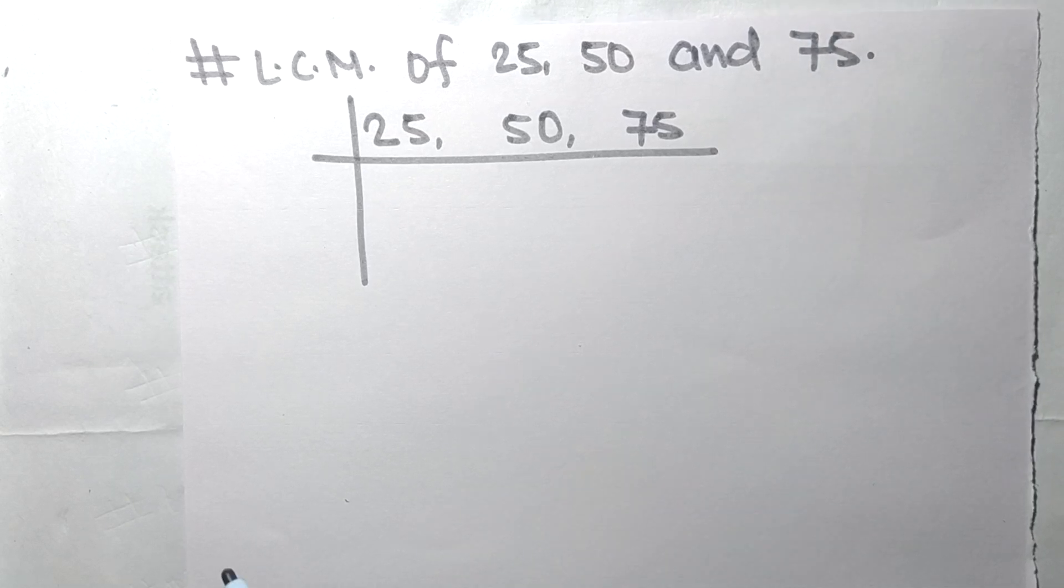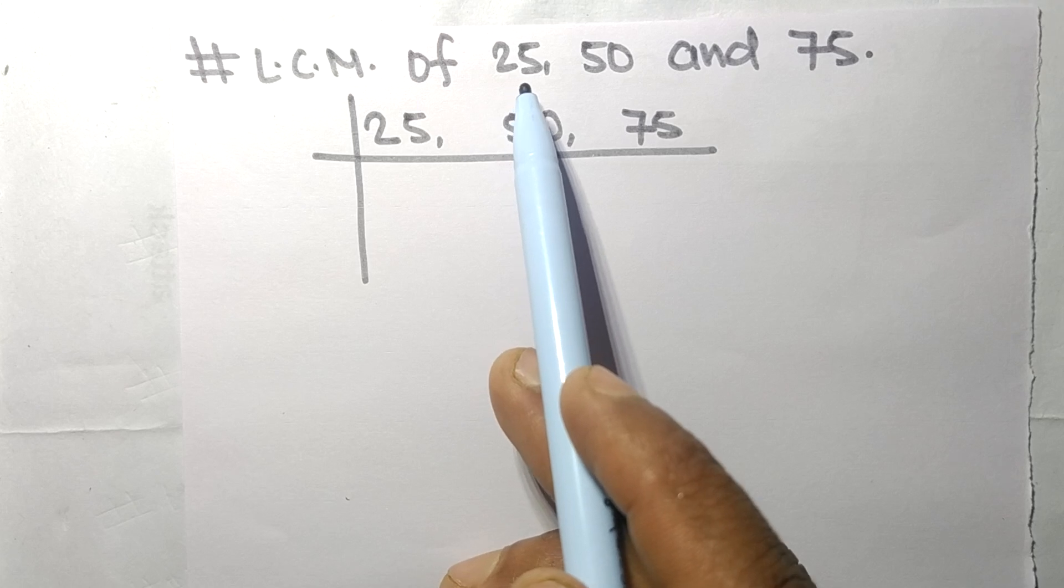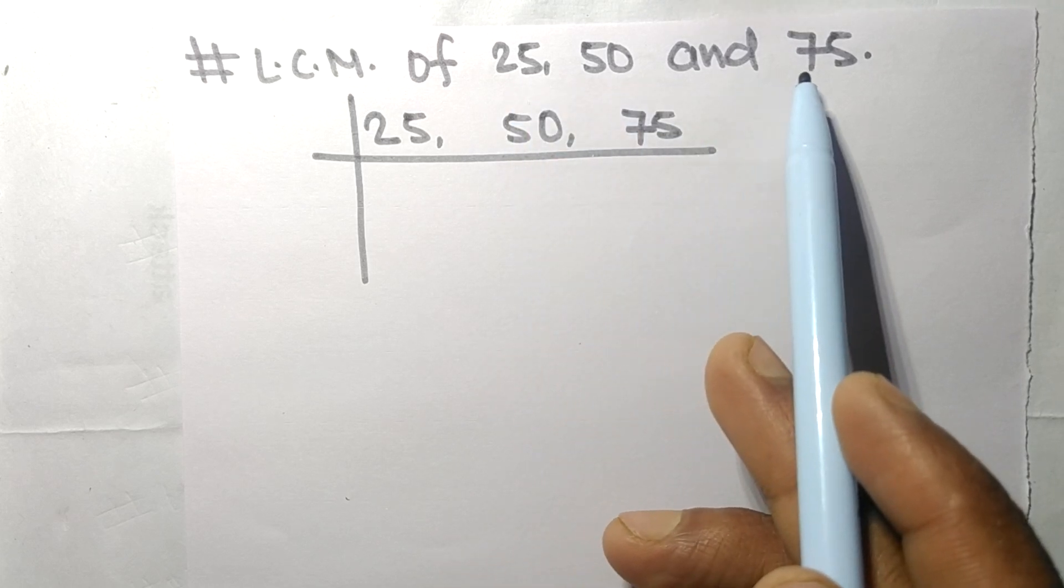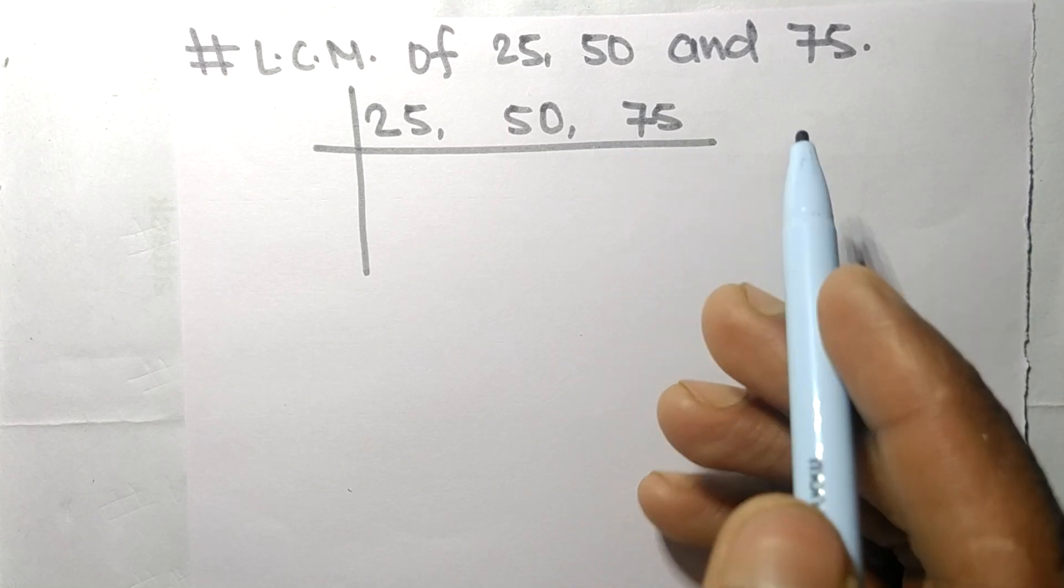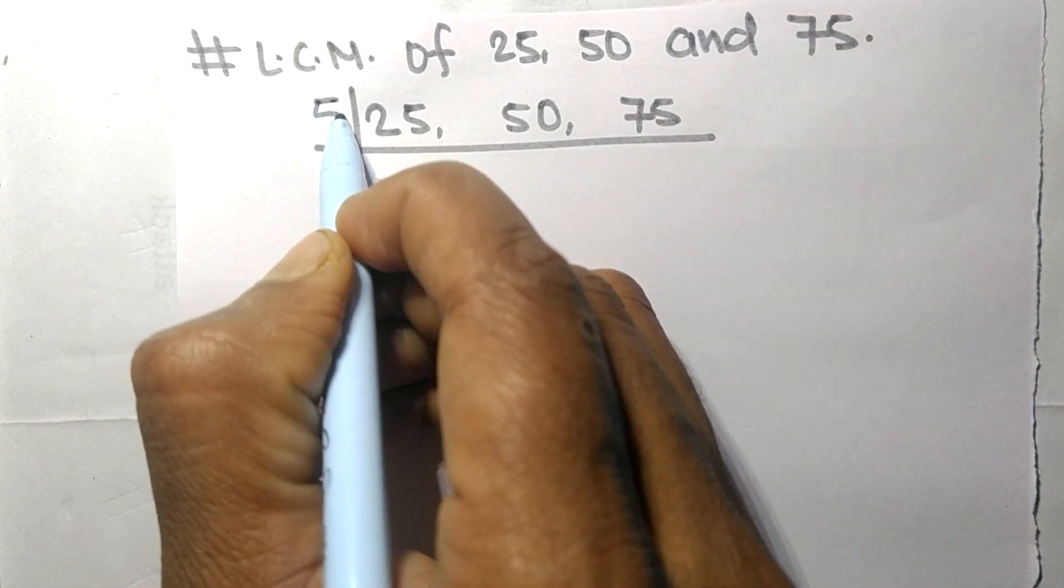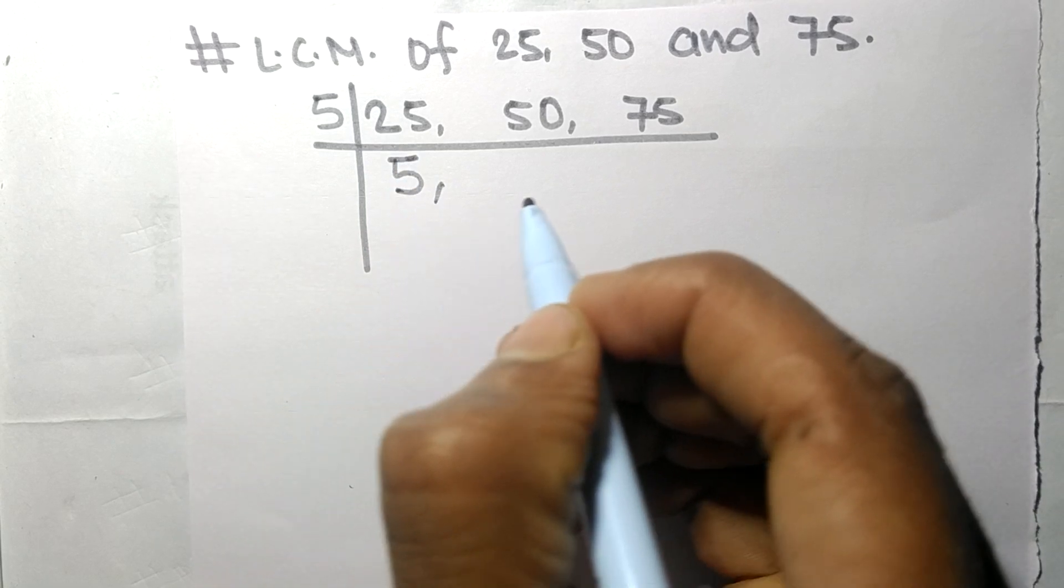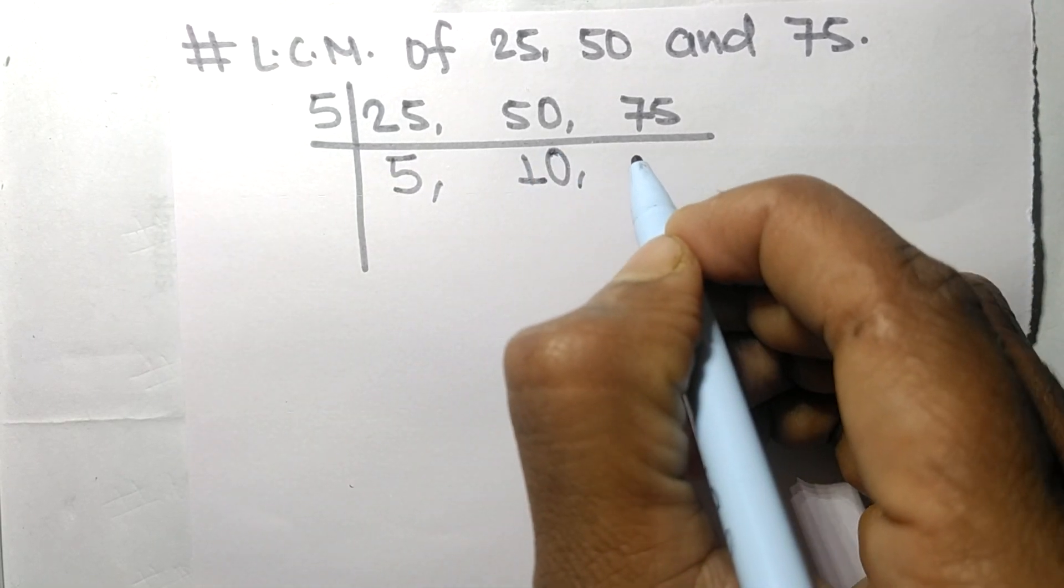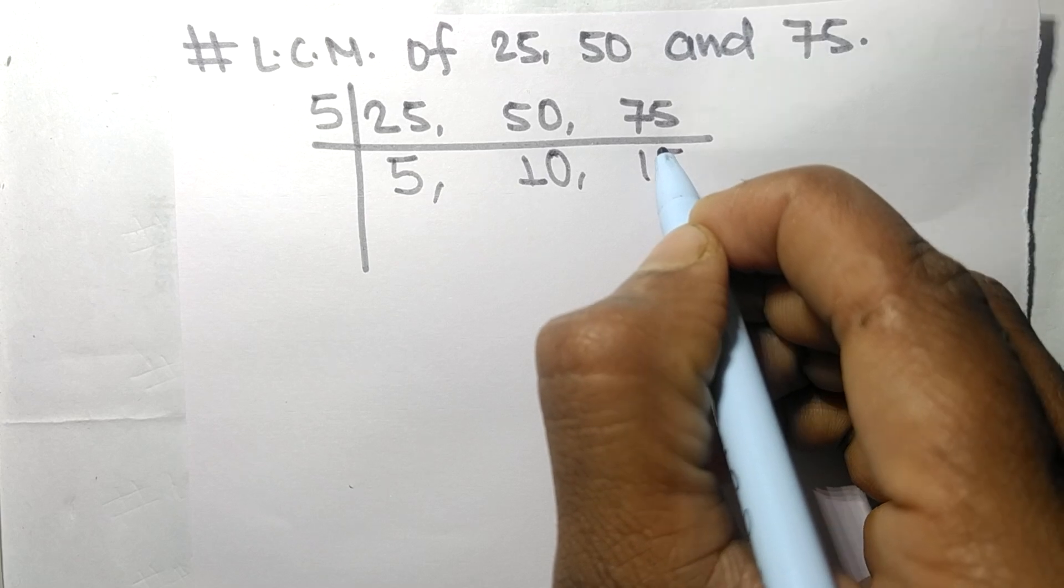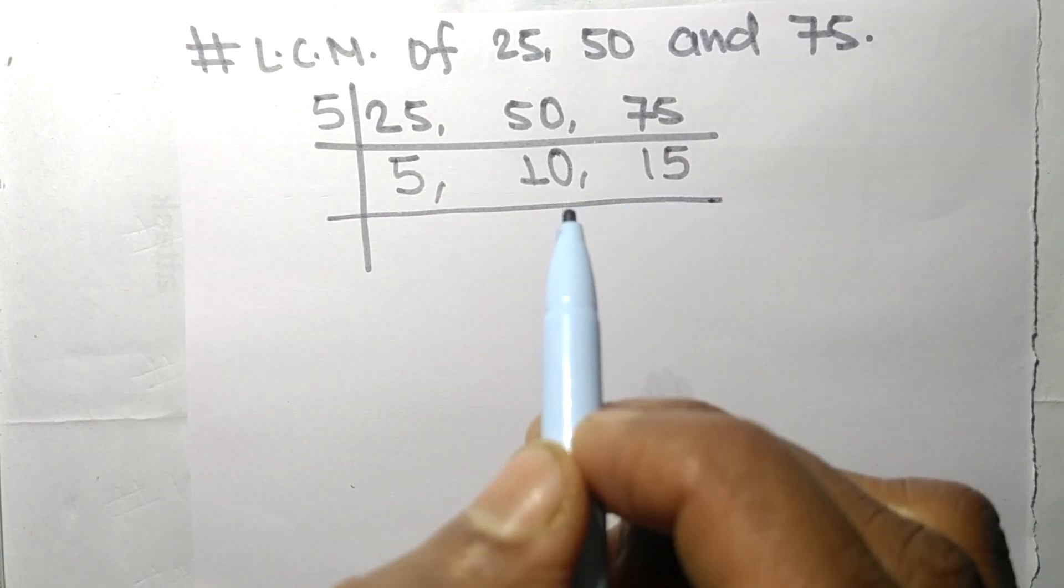Today in this video we shall find the LCM of 25, 50, and 75. These all numbers are divisible by 5. 5 times 5 means 25, 5 times 10 means 50, 5 times 15 means 75.